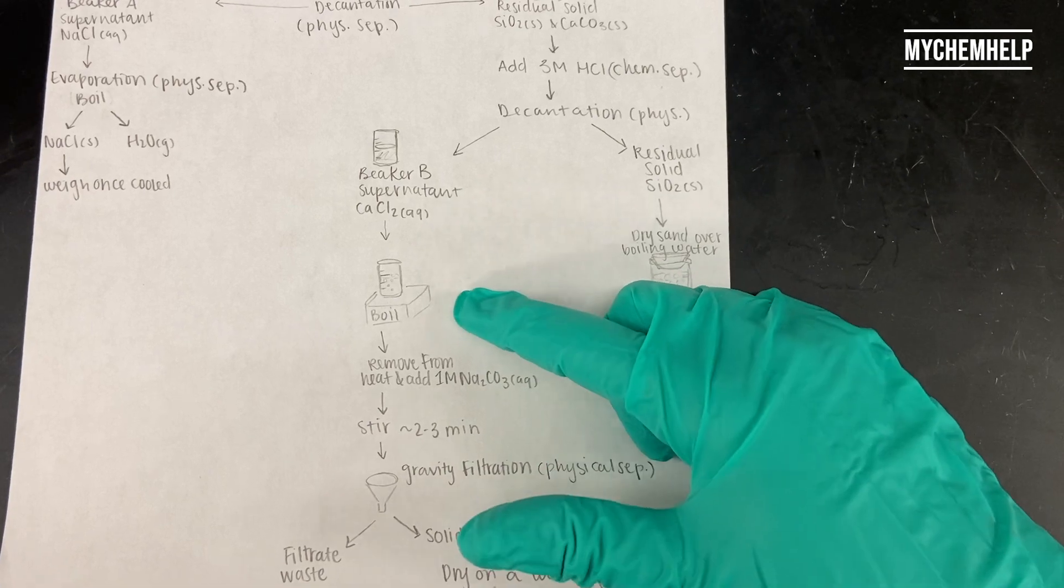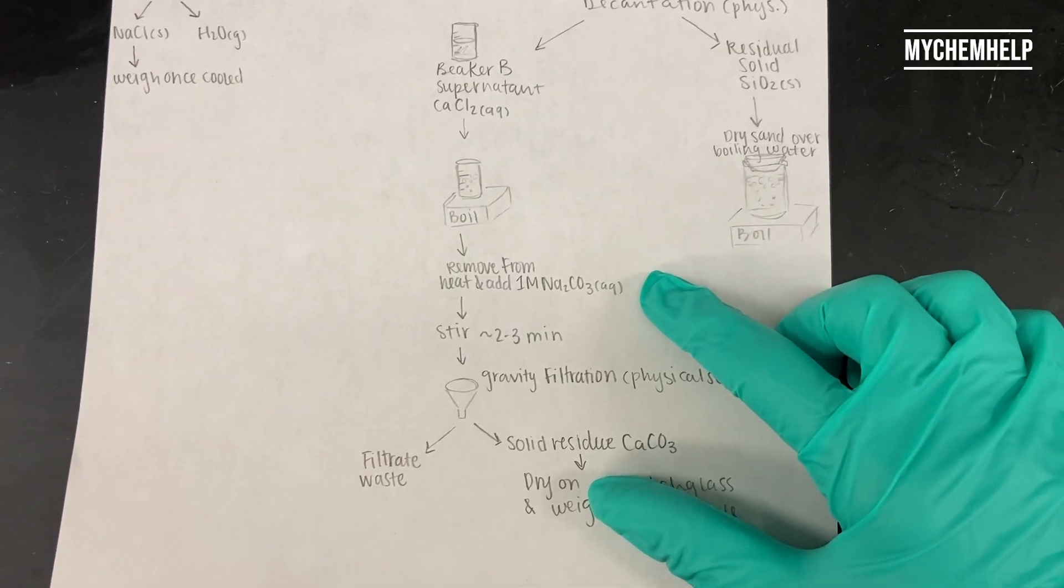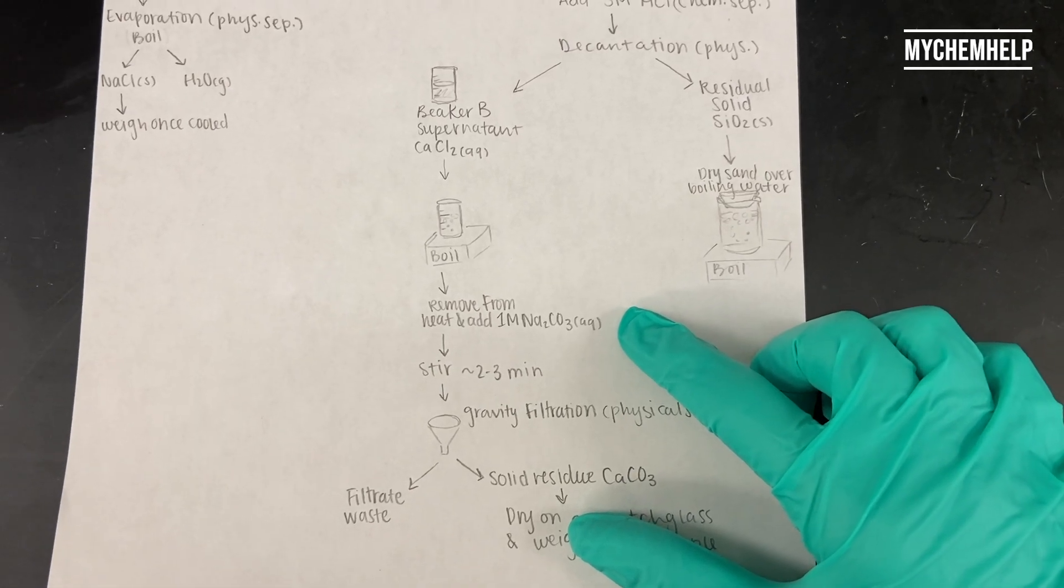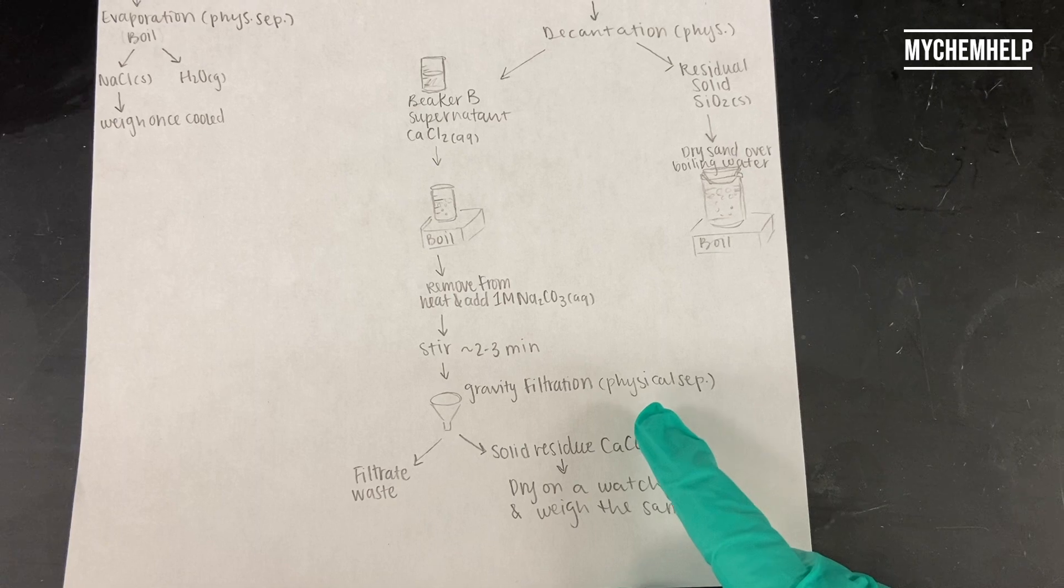And then back to beaker B, we're going to get that up to boiling, remove that from heat, and add one molar sodium carbonate. Stir for about two to three minutes, do a gravity filtration.